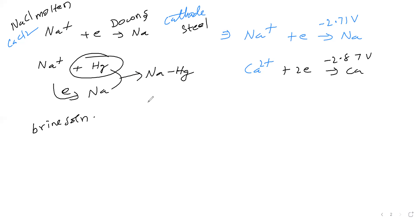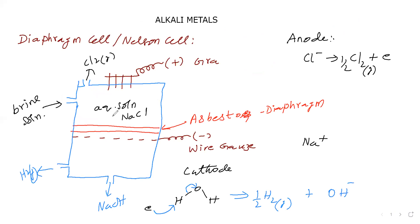Now in the mercury cathode cell, brine solution is the electrolyte and sodium ion undergoes reduction at the mercury cathode. But in the Nelson cell, sodium ion goes to the cathode without undergoing reduction — it passes down and comes out. Water penetrates through the asbestos, goes to the wire gauze, undergoes reduction and becomes hydrogen gas, while OH⁻ comes down along with sodium to form sodium hydroxide.